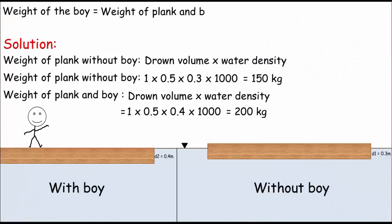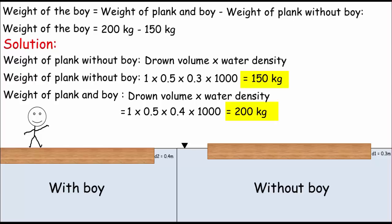And finally, the weight of the boy must be the weight of plank and boy minus the weight of plank only. So the weight of the boy equals 200 kilograms minus 150 kilograms, which is 50 kilograms of course. And that's it, so did you figure it out?